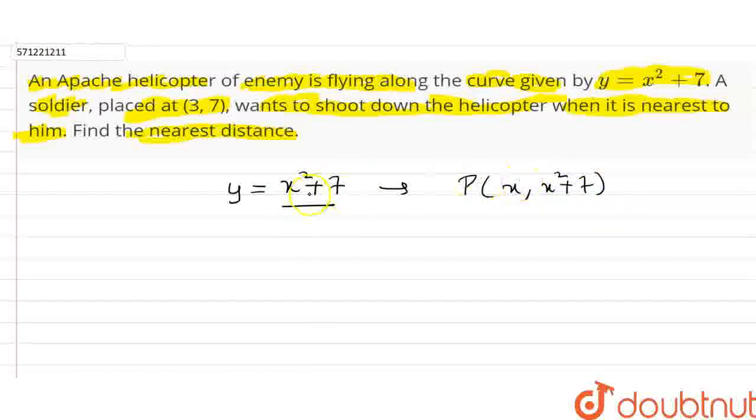It is the point on this curve that is x and y from this equation x square plus 7. And let this (3,7), the position of soldier, be equal to Q.